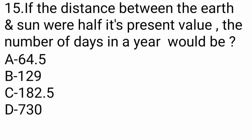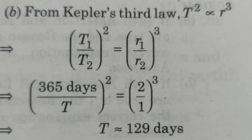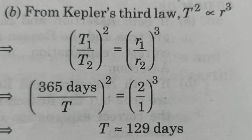Question number 16: If the distance between the Earth and Sun were half of its present value, the number of days in a year would be — options: 64.5, 129, 182.5, or 730. Using Kepler's third law: T² is directly proportional to r³. The answer is 64.5 days.